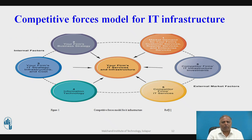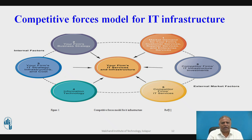This is the diagram of the competitive forces model for IT. The firm's IT infrastructure services are influenced by: first, market demand for your firm's customer, supplier, and enterprise services; second, your firm's business strategy; third, your firm's IT strategy and infrastructure costs; fourth, information technology assessment; fifth, competitor firm's services; and sixth, competitor firm's IT infrastructure investment. Together, all these elements provide your firm's IT service and infrastructure to the organization.